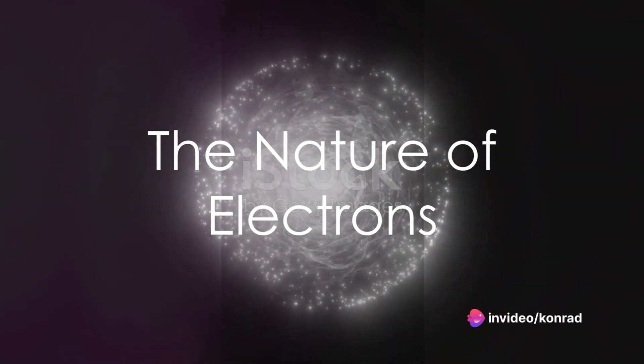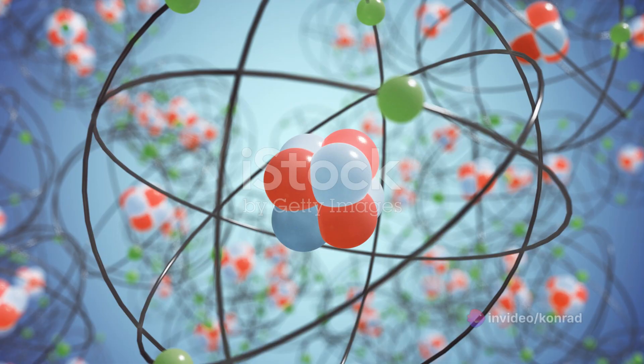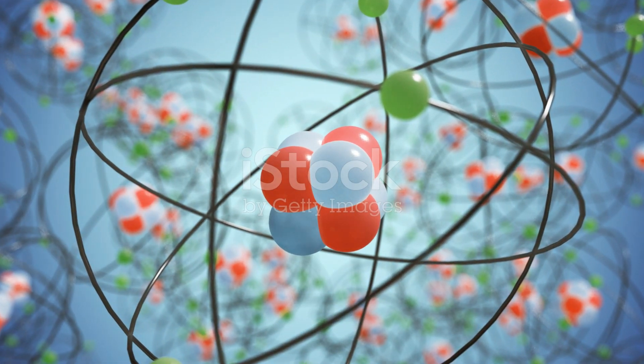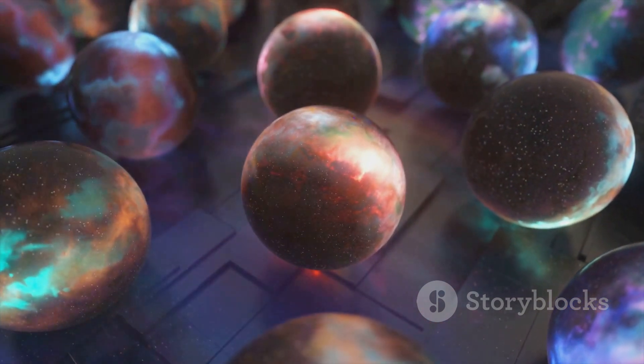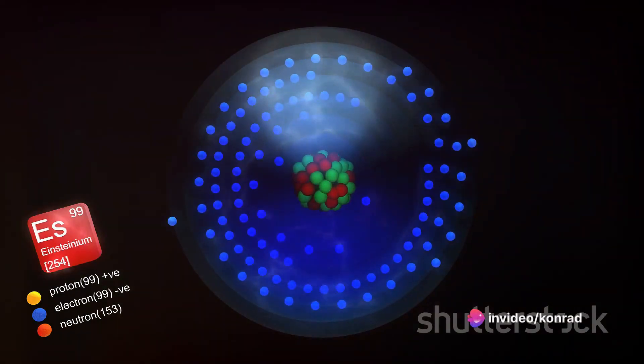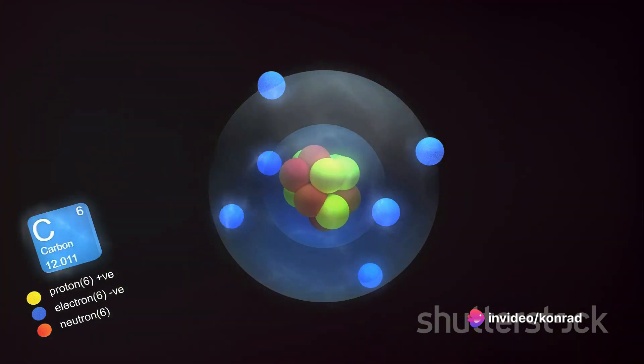Electrons are part of the lepton particle family and they are considered elementary particles. This means that they have no known components or substructure. They are, in essence, the building blocks of the universe. These particles are incredibly light, with a mass approximately 1,836th of a proton.